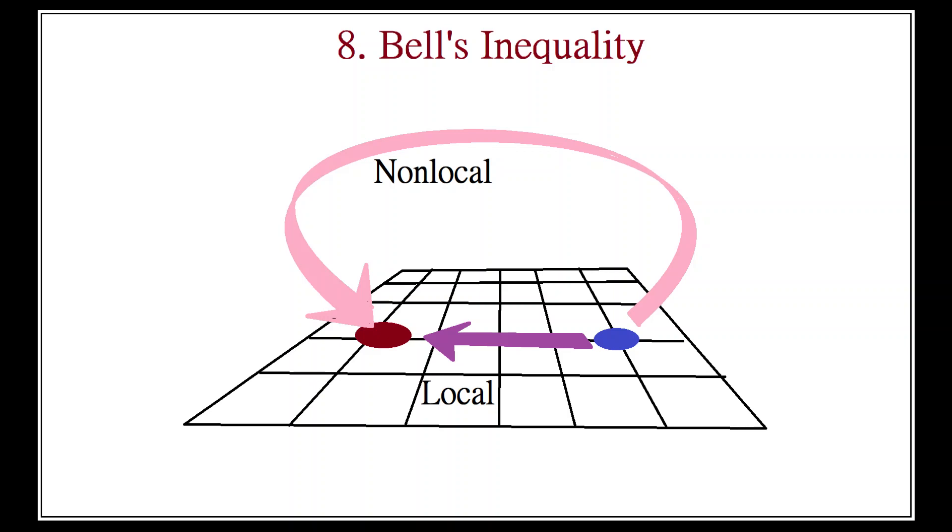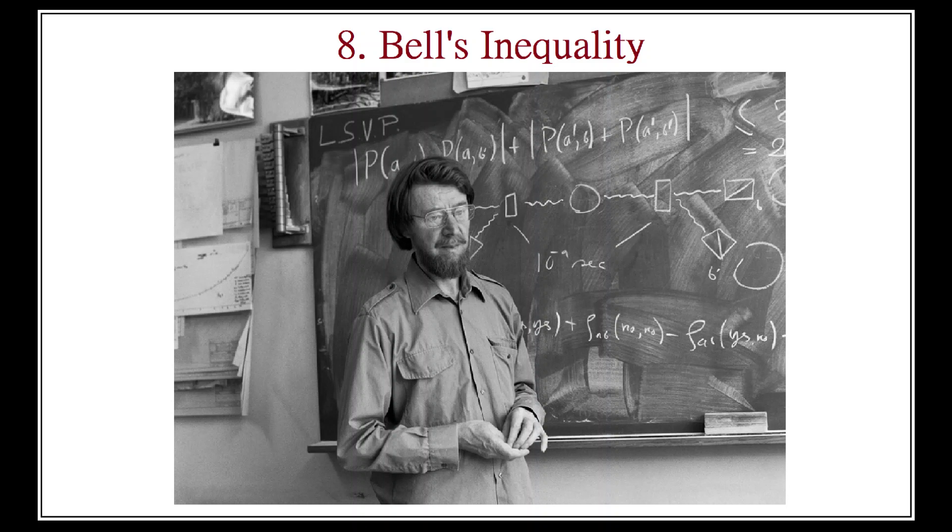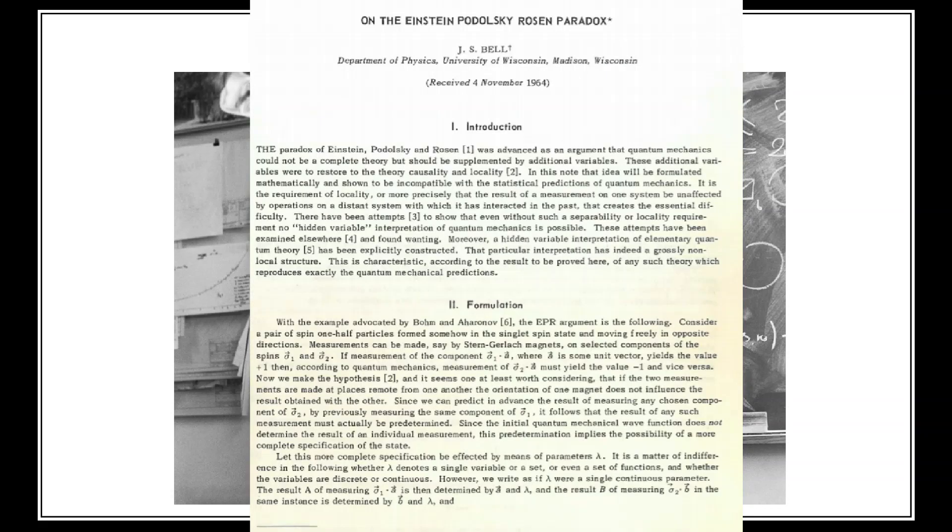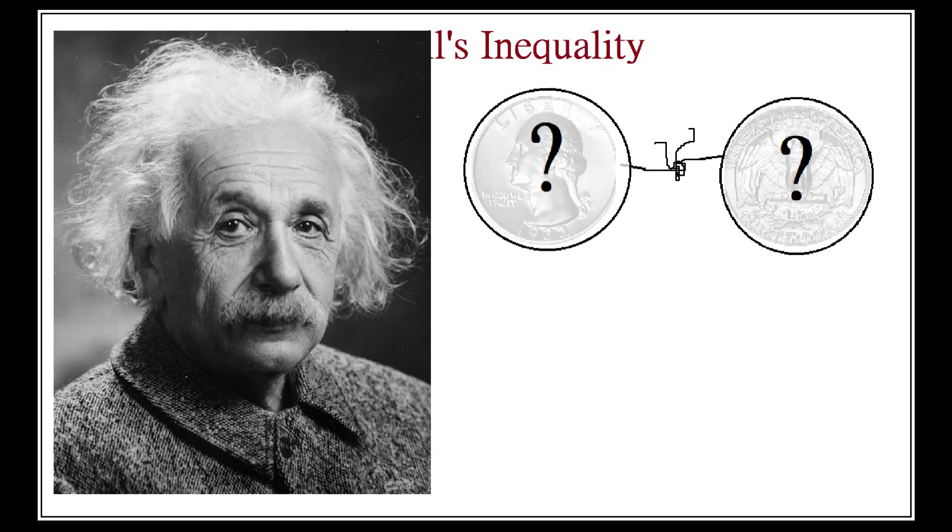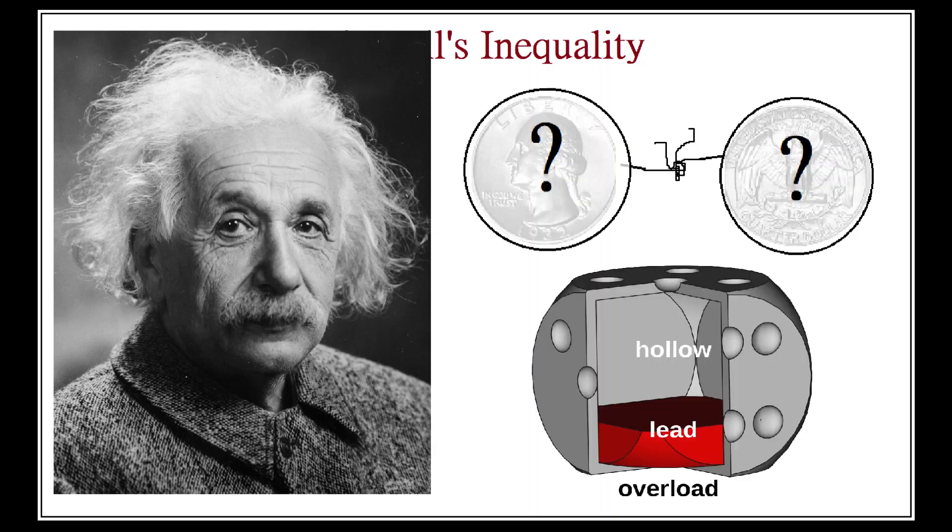Years later, an Irish physicist named John Bell decided to force the issue in Einstein's favor. In a 1964 paper, he laid the groundwork for a profound experiment. The core of his argument is this. If Einstein is right, and things have determined properties before you measure them, then god's dice are loaded.